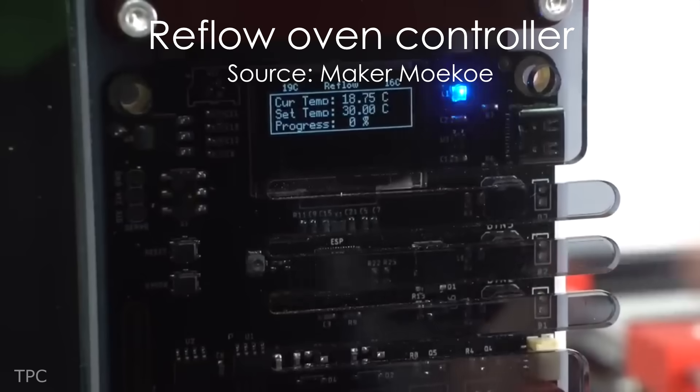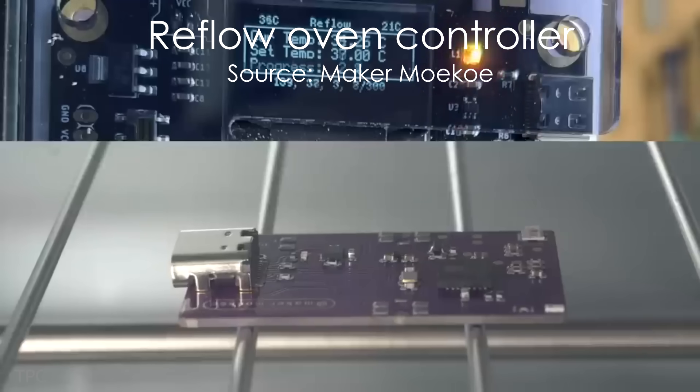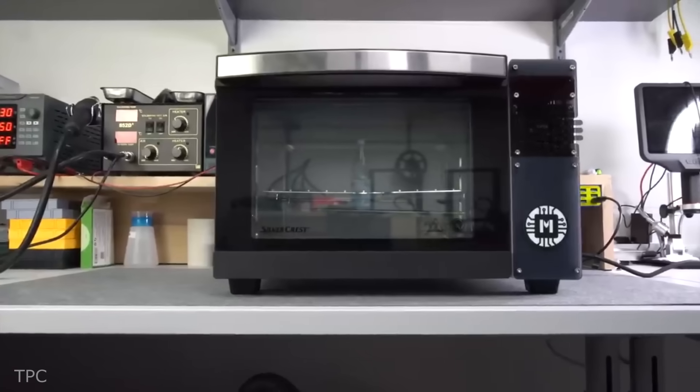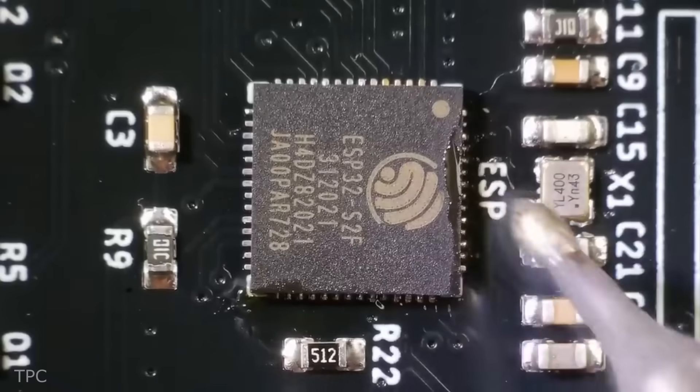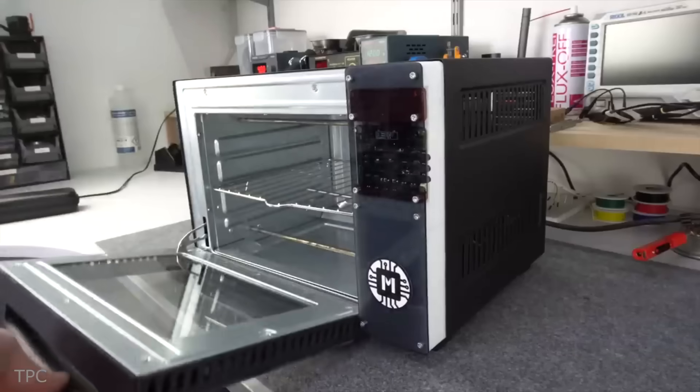This innovative board can turn an ordinary oven into a fully functional reflow oven. That's right. Maker Moco has designed this project using an ESP32S2, making it one of the best we've seen so far.